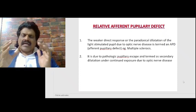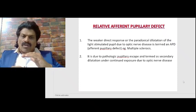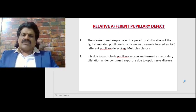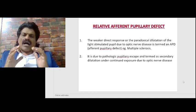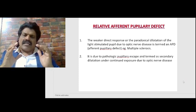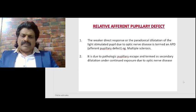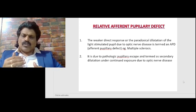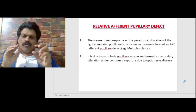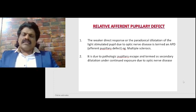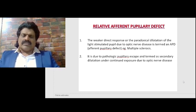The weaker direct response, or the paradoxical dilatation of the light-stimulated pupil due to optic nerve disease, is termed afferent pupillary defect — relative afferent pupillary defect — as seen in multiple sclerosis. It is due to pathologic pupillary escape and termed as secondary dilatation under continued exposure due to optic nerve disease.